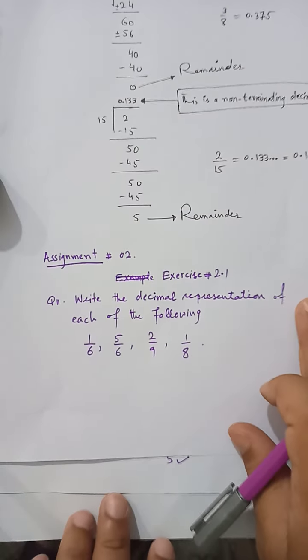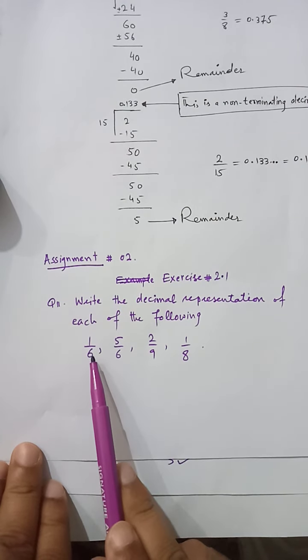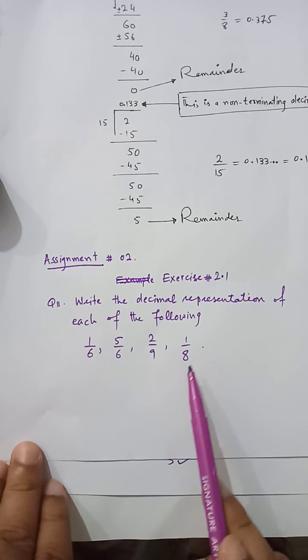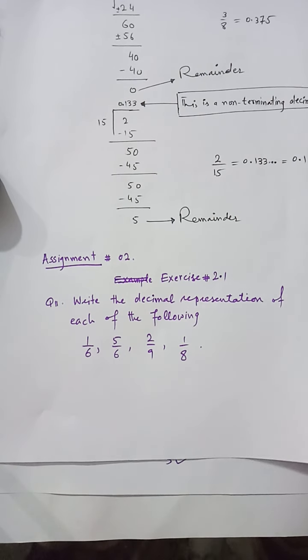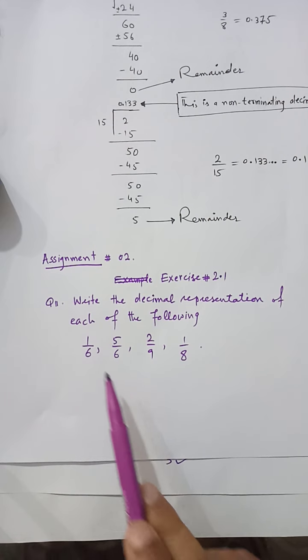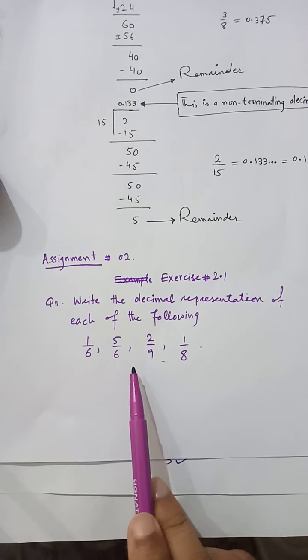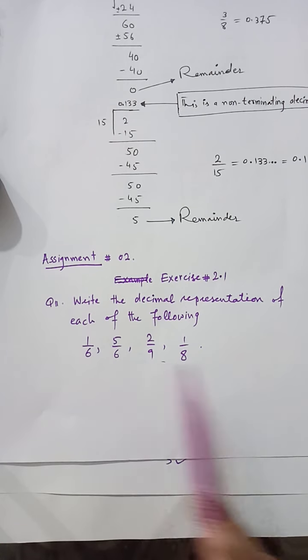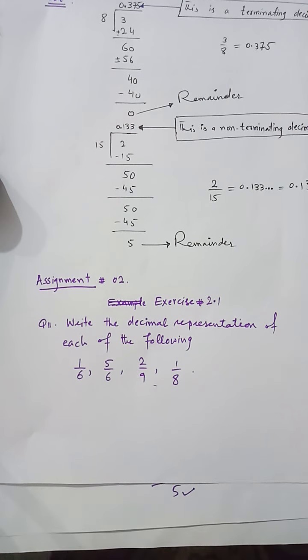The assignment for you is Assignment Number 2, Exercise 2.1, Question 11: convert 1/6, 5/6, 2/9, and 1/8 into decimal representation, then determine whether each is rational or irrational. Although all of them will be rational since they are all in p/q form with integer p, q and q ≠ 0.